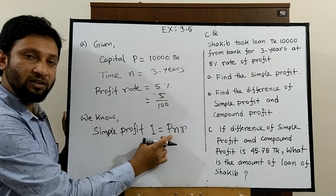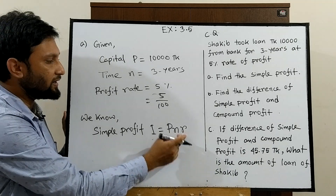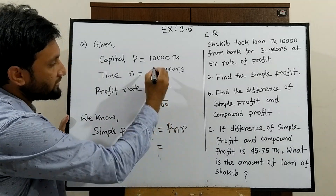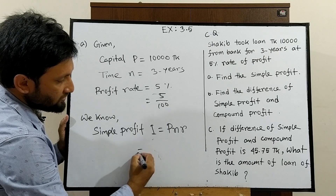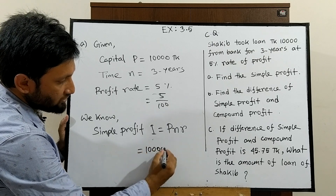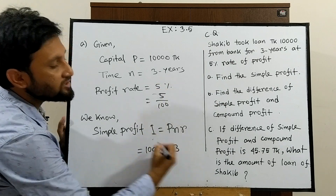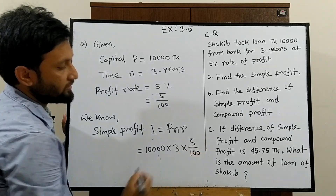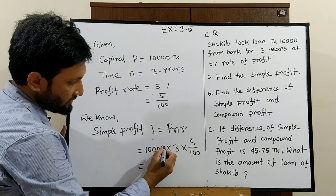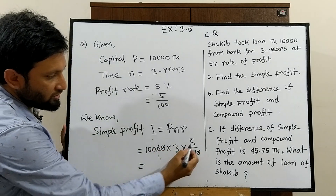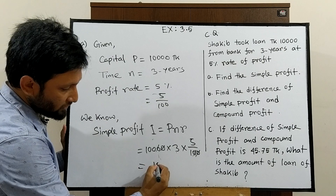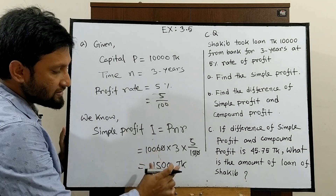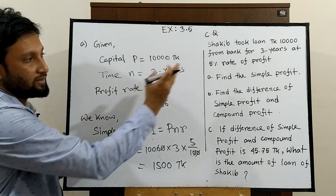Where I is interest, P is capital, N is number of time, and R is profit rate. Using the values: P = 10,000 Taka, N = 3 years, and profit rate = 5/100. By simple calculation: 3 × 5 = 15, then 10,000 × 15/100 = 1,500 Taka. So the simple profit is 1,500 Taka. Part A is complete.